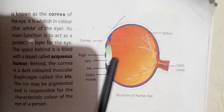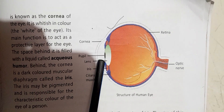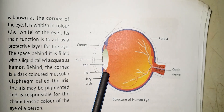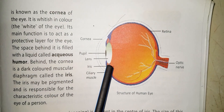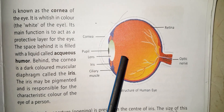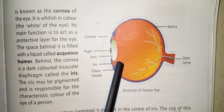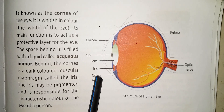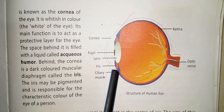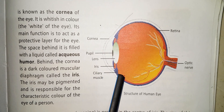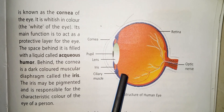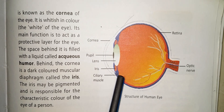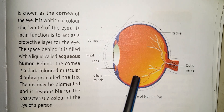The space behind the cornea is filled with a liquid called aqueous humor. Behind the cornea is a dark-colored muscular diaphragm, which you can see in the diagram. It is called the iris. The iris may be pigmented and it is responsible for the characteristic color of a person's eye.